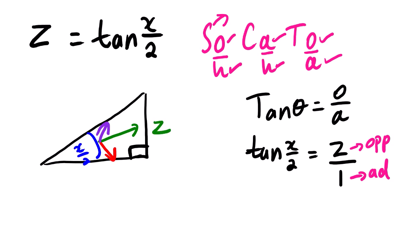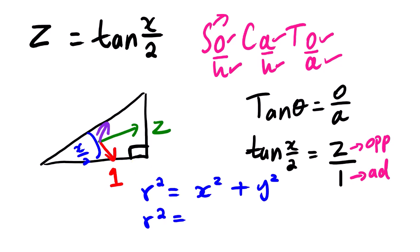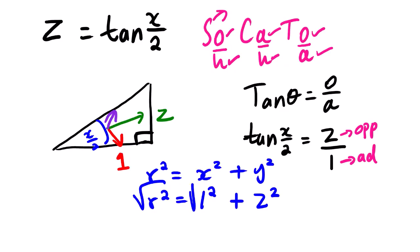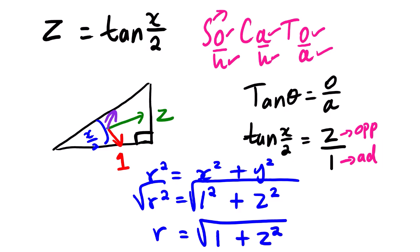The opposite is Z and the adjacent side is 1. Using the theorem of Pythagoras, R² = X² + Y², where R² is the hypotenuse. We have 1² + Z², so taking the square root of both sides, R = √(1 + Z²). So the hypotenuse side is √(1 + Z²).